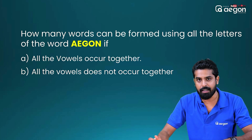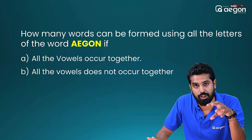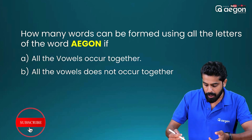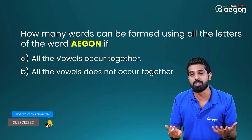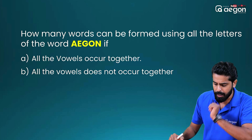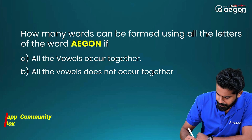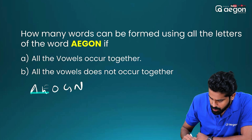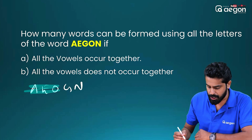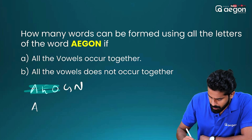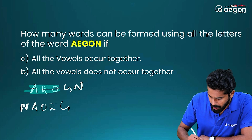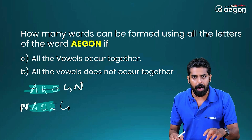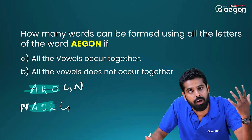All the vowels occur together. When we make a word, the condition is all the vowels occur together. The word is A-E-O-G-N. All the vowels are A, O, E, and the consonants are N, G.